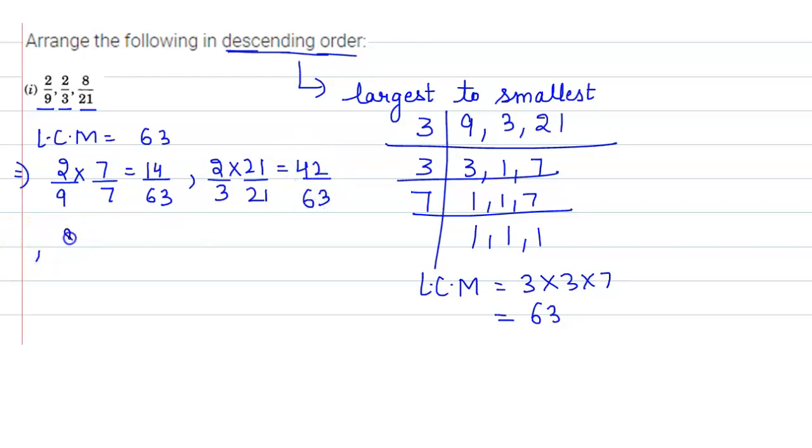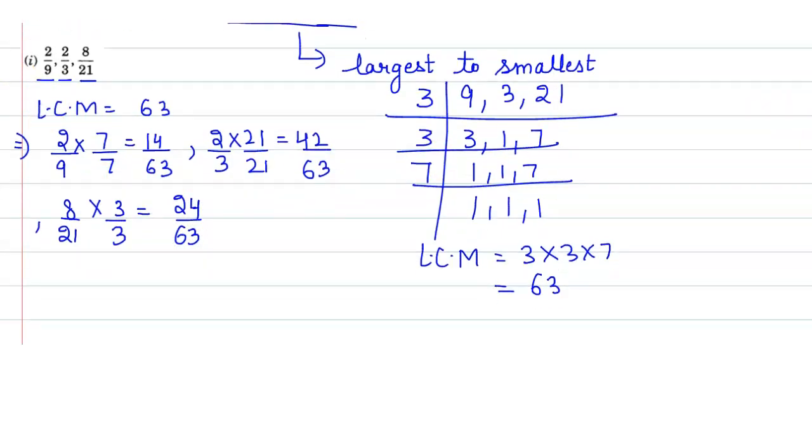And last one is 8 upon 21, which is 63 divided by 21 gives 3. So here we get 24 upon 63. Now let us arrange these 3 into descending order.